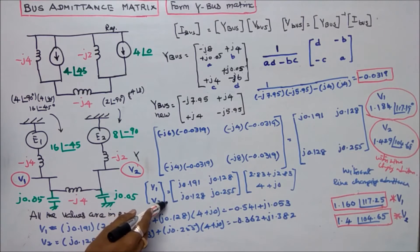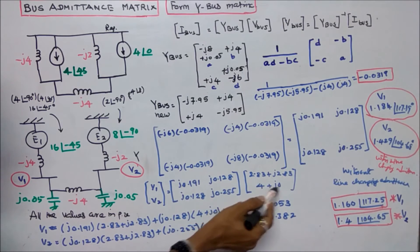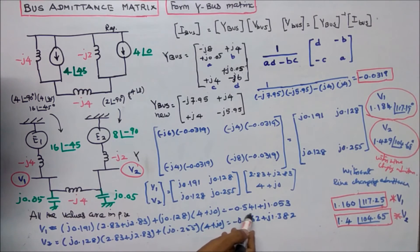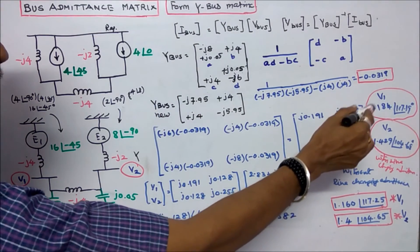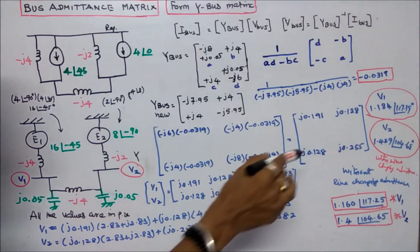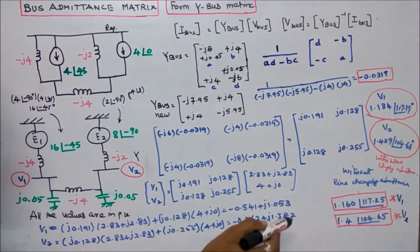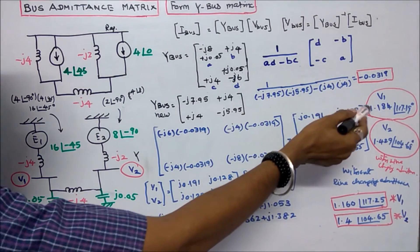Computing V1 and V2: V-bus equals Y-bus inverse matrix times [2.83 plus J2.83; 4 plus J0]. V1 in rectangular form equals minus 0.541 plus J1.053. In polar form, V1 equals 1.184 angle (approximately). Without line charging admittance, V1 was 1.168; with line charging admittance, V1 is slightly increased to 1.184.